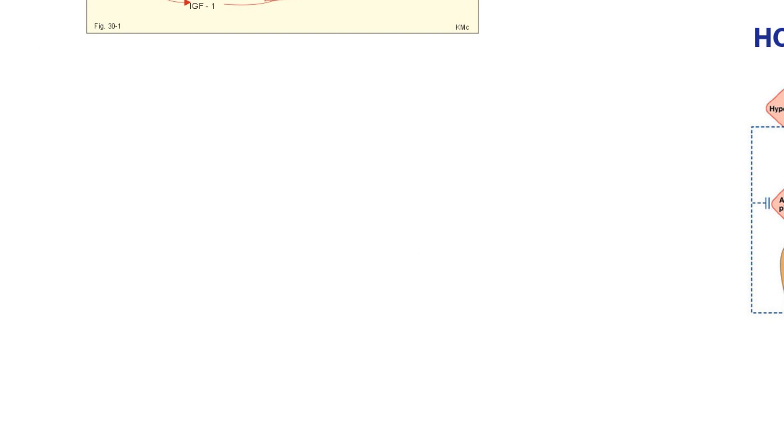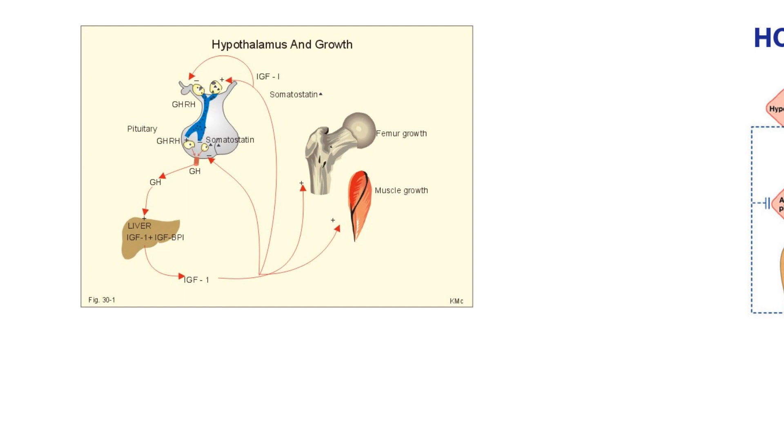Now we're on to our I word: insulin-like growth factor one. Here's a nice little diagram. The liver makes IGF-1, but it doesn't do it on its own or mindlessly. It makes IGF-1 when the pituitary gland releases growth hormone. Growth hormone goes in the blood. It's got receptors in the liver. The liver says, okay, I'm going to make IGF-1. It doesn't change it into IGF-1, it makes it. And then IGF-1 is released and it has different target tissues.